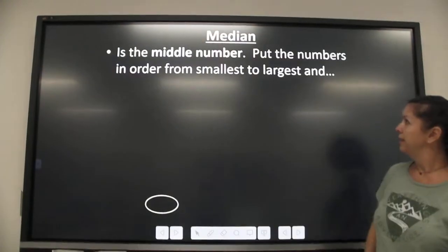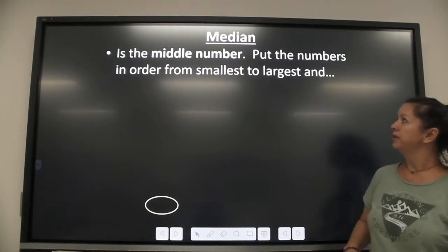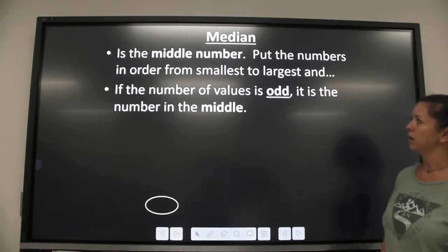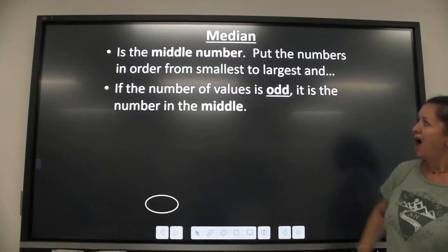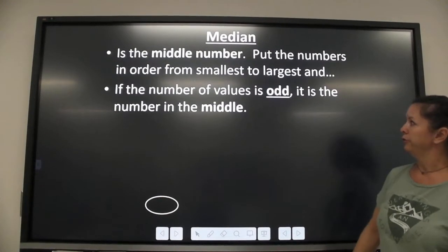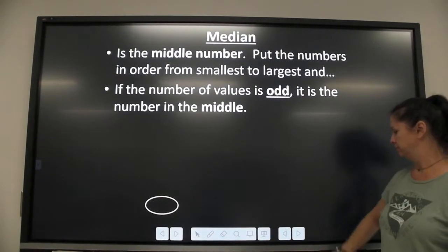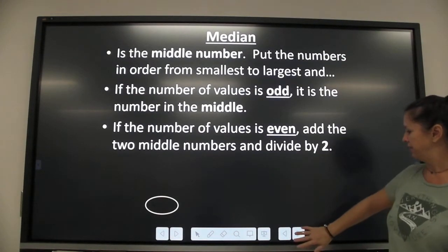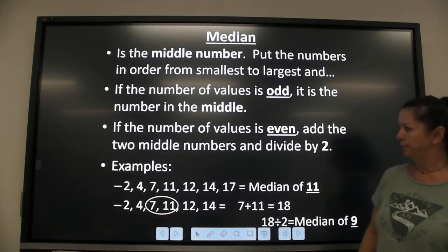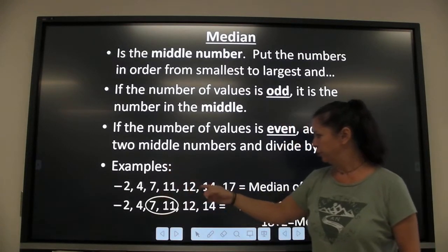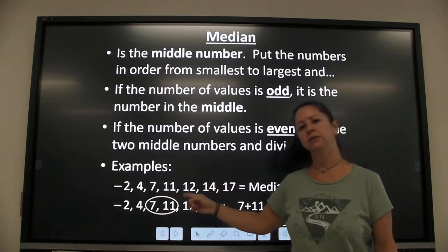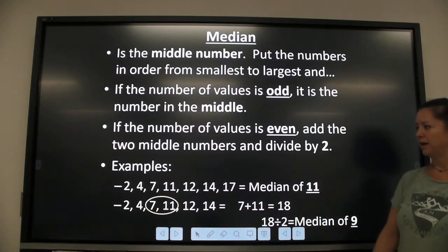Median is the one that's in the middle. Put the numbers in order from smallest to largest. So get them in order. And if that's an odd number of values, it's literally the one sitting in the middle. So for example, 2, 4, 7, 11, 12, 14, 17. There's 7 numbers here. So the one that's sitting in the middle is 11. So the median is 11.